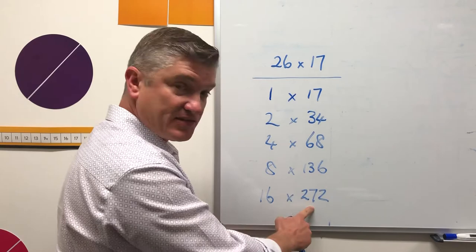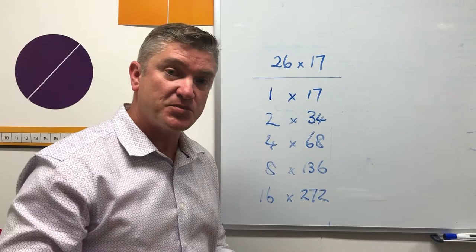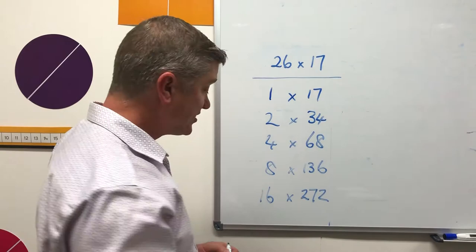How many 17s am I after? I'm after 26 17s. So what the ancient Egyptians would do is look at their list and say what I need to add here to find 26 17s.